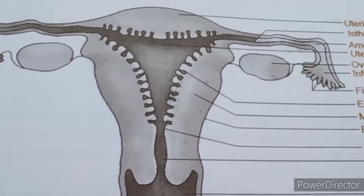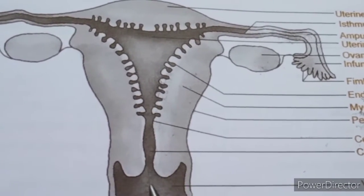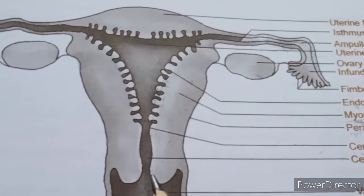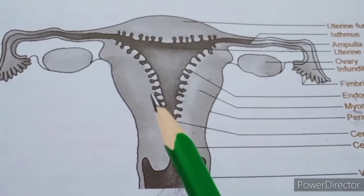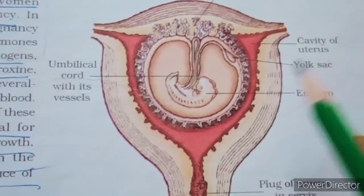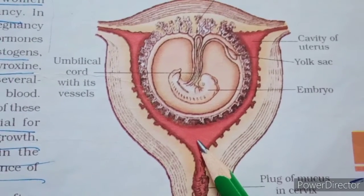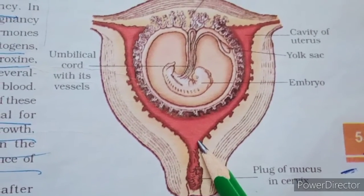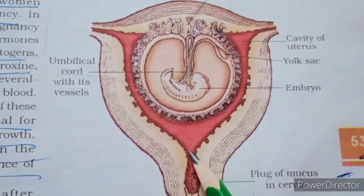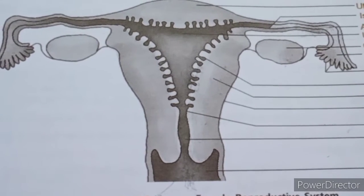The uterus connects to the vagina through the cervix, called the mouth of the uterus. The cervix and vagina together constitute the birth canal. Functions of the cervix: it allows menstrual blood to flow from the uterus into the vagina; during pregnancy it closes to keep the fetus safely within the uterus and prevents further sperm entry; and during childbirth it dilates to allow the fetus to pass from the uterus to the vagina.